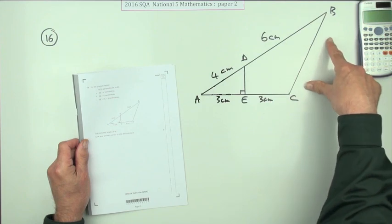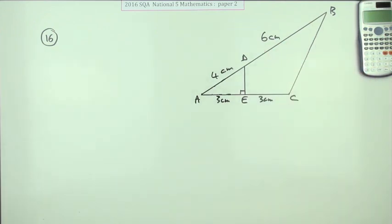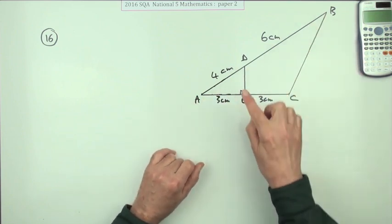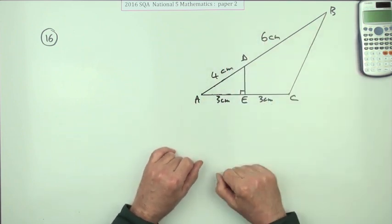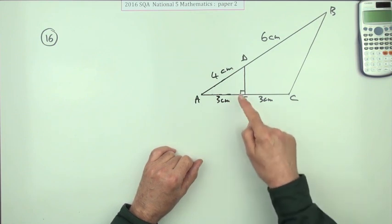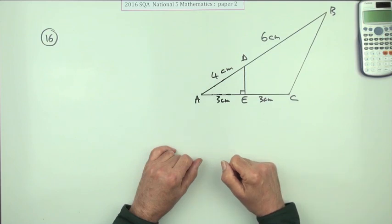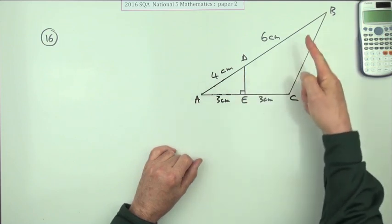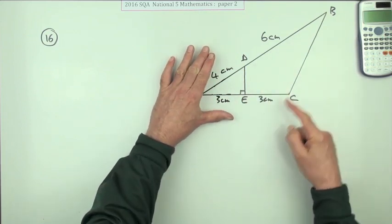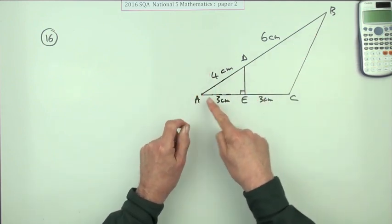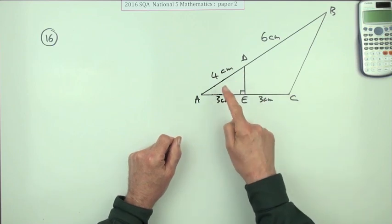Calculate the length of BC, giving your answer to one decimal place. It has the appearance of similar triangles with those split portions of the sides, but they're obviously not equiangular because that's got a right angle. The next thing you think of is two adjacent sides to find the third side - that would be the cosine rule if I knew that angle.